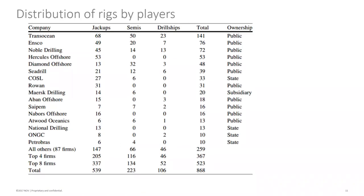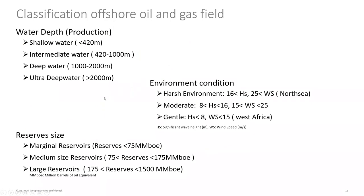Regarding the distribution of rigs: the market is driven by a small number of players. The top three or four companies hold about 40% of the oil and gas vessels in the world. Rigs are classified according to depth, as well as environmental conditions — harsh, moderate, or gentle — which is based on wave height and wind speed. Reservoir size is also a factor: marginal, medium, or large. The bigger the reservoir, the more attractive it is to operators.